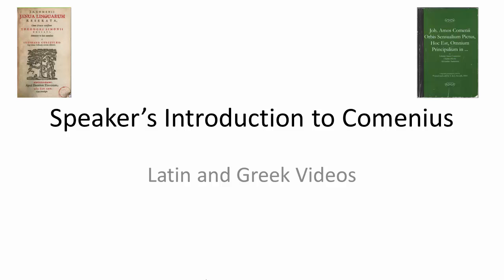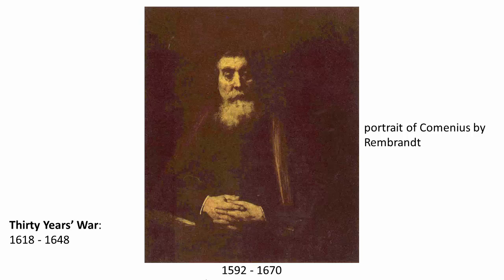Introduction to Comenius, the Latin and Greek videos. John Amos Comenius was a Protestant theologian and educator, born in 1592 in Moravia, which is now part of the Czech Republic. He died in 1670 in Amsterdam, having been forced to live in exile from his native land for much of his adult life because of the religious wars of the time.